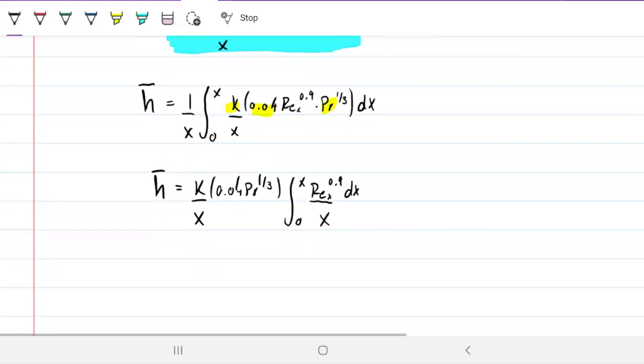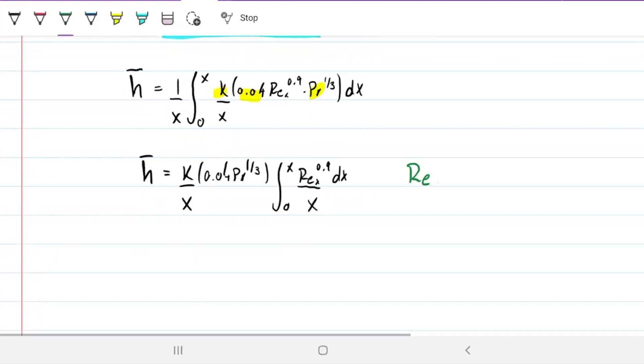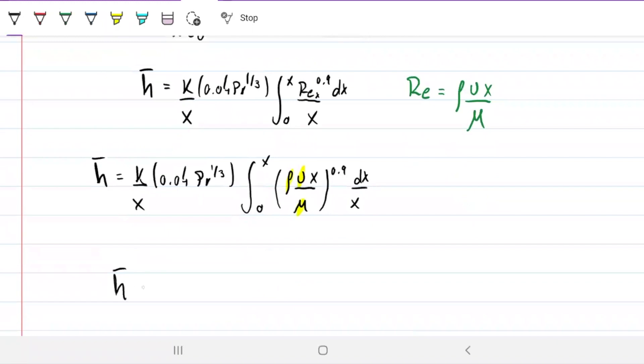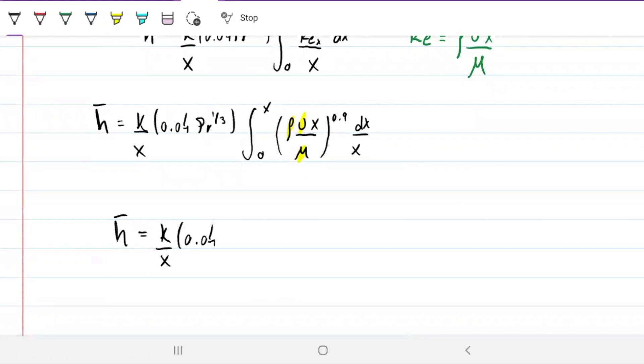Next thing I'm going to do is I'm going to break down Reynolds because we know Reynolds is density velocity x divided by my viscosity. So let's break it down and put it into that equation. k over x times 0.04 Pr^(1/3) integral from 0 to x of (ρVx/μ)^0.9 dx divided by x. Again, this doesn't care about x. This doesn't care about x. This doesn't care about x. We can remove those guys.